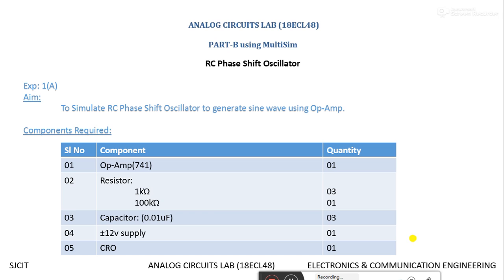Welcome to Part B simulation experiments. Today's experiment is 1A: RC Phase Shift Oscillator. The aim is to simulate an RC phase shift oscillator to generate a sine wave using an op-amp. Components required: op-amp, resistors of 1 kilo ohm and 100 kilo ohms, capacitor of 0.01 microfarad, plus or minus 12 volt power supply, and a CRO.